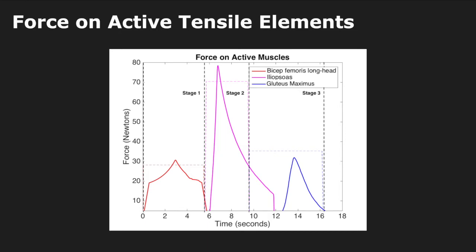The estimated forces given from the simulator gave us a target tensile force for the active elements to approach. As shown in the plot, stages one through three are contracting one single muscle to imitate one cycle of gait.